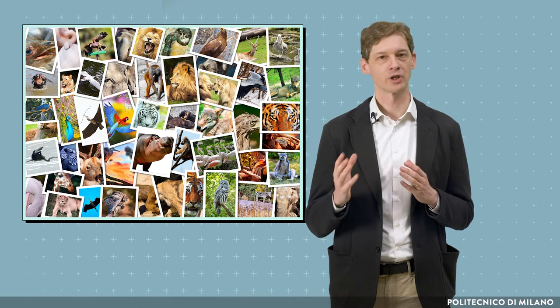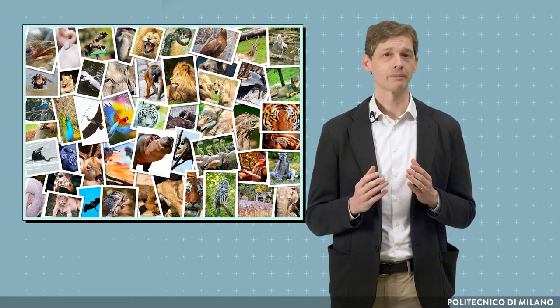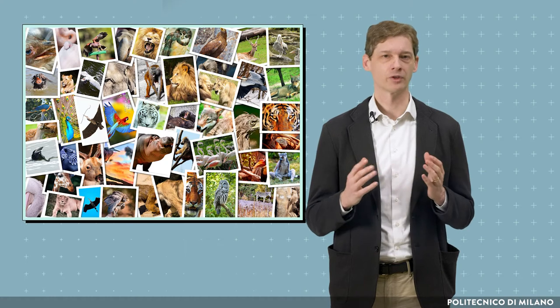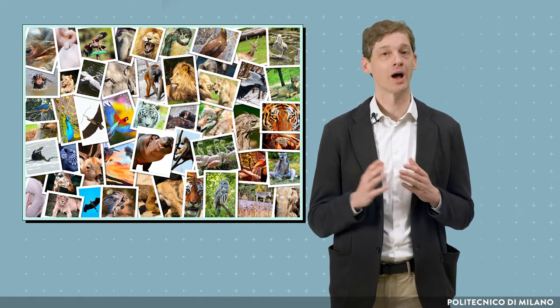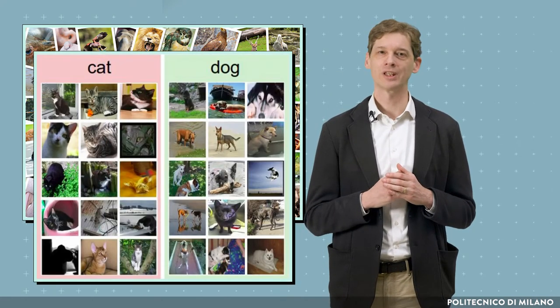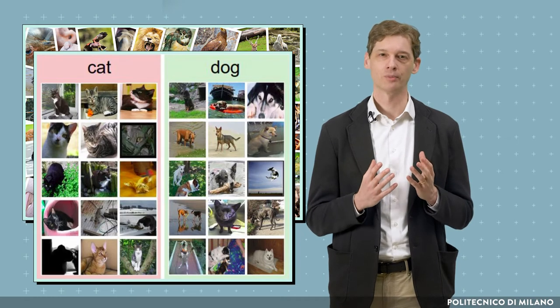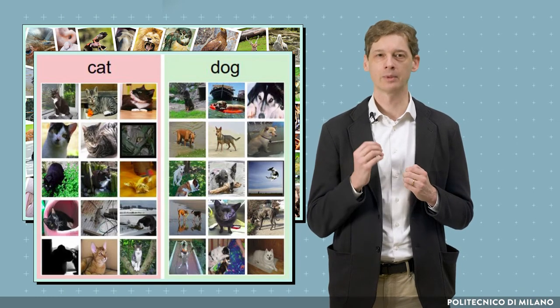Machine learning is useful whenever we don't know, or it's very complex to explain to the machine, how to solve a certain task, while it is easier to show the machine examples of how the problem is solved and let it learn to find a solution on its own. For instance, suppose that we want to develop a program to recognize animals from their pictures. Using machine learning, we simply have to provide a set of examples where, for each image, we need to indicate which animal is portrayed.